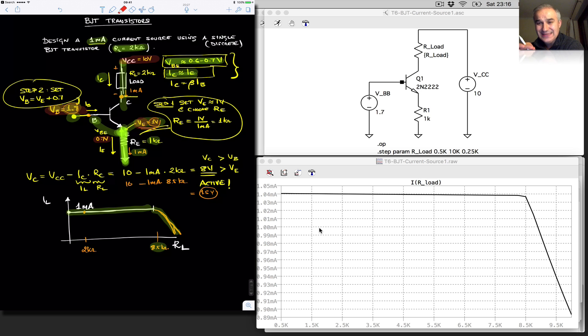To make sure that we have a base emitter junction forward bias, and with the emitter at 1 volt, we could select the emitter resistor at 1k. 1 volt over 1k gave us the 1 milliamp that we needed, and the collector current is very close to the emitter current, so we got the design working.